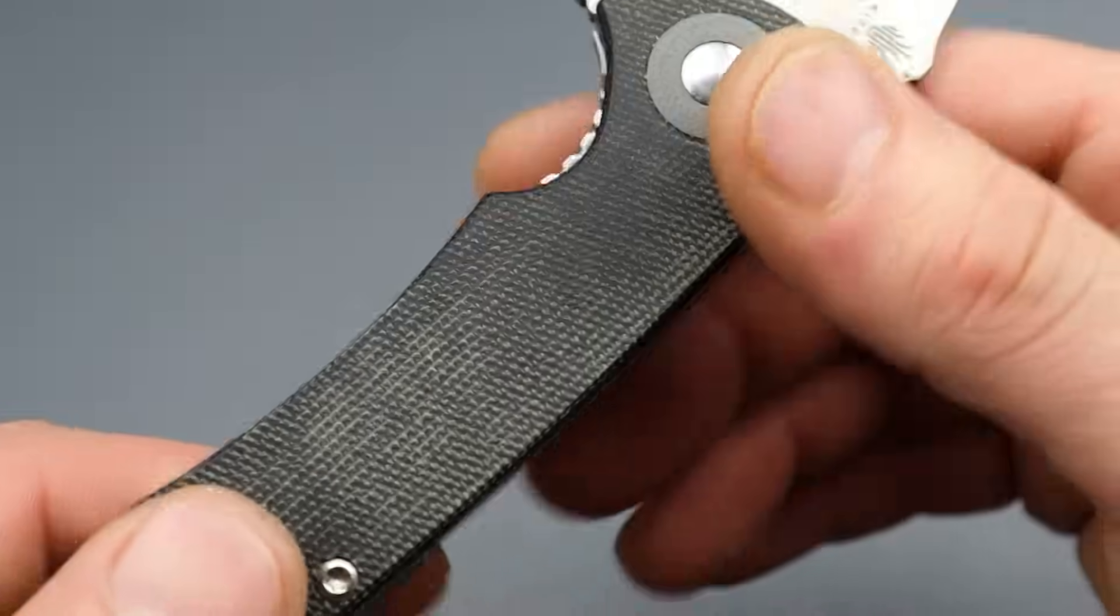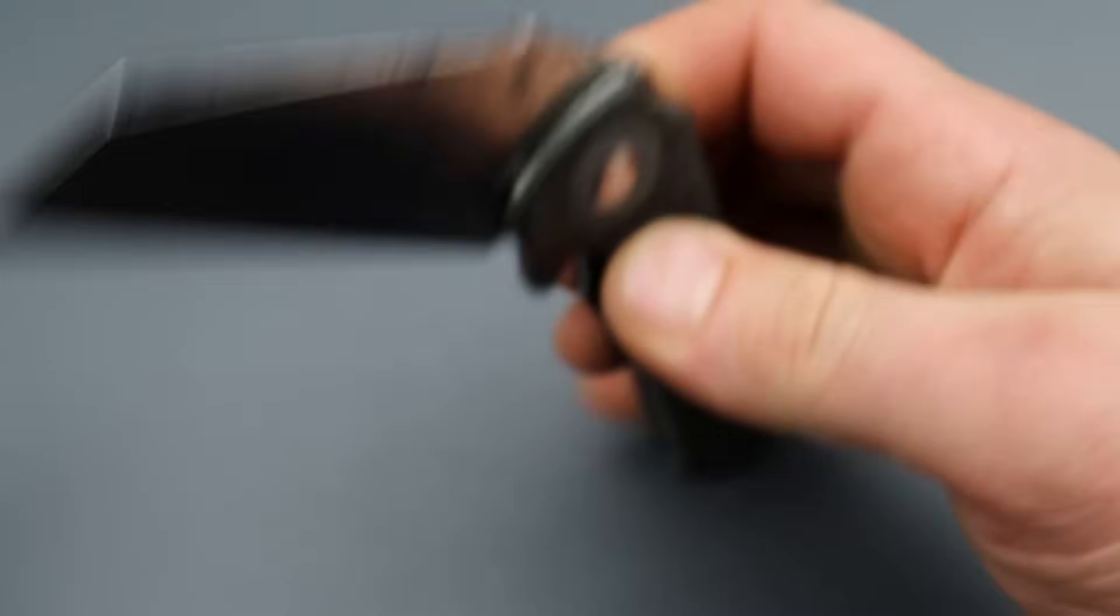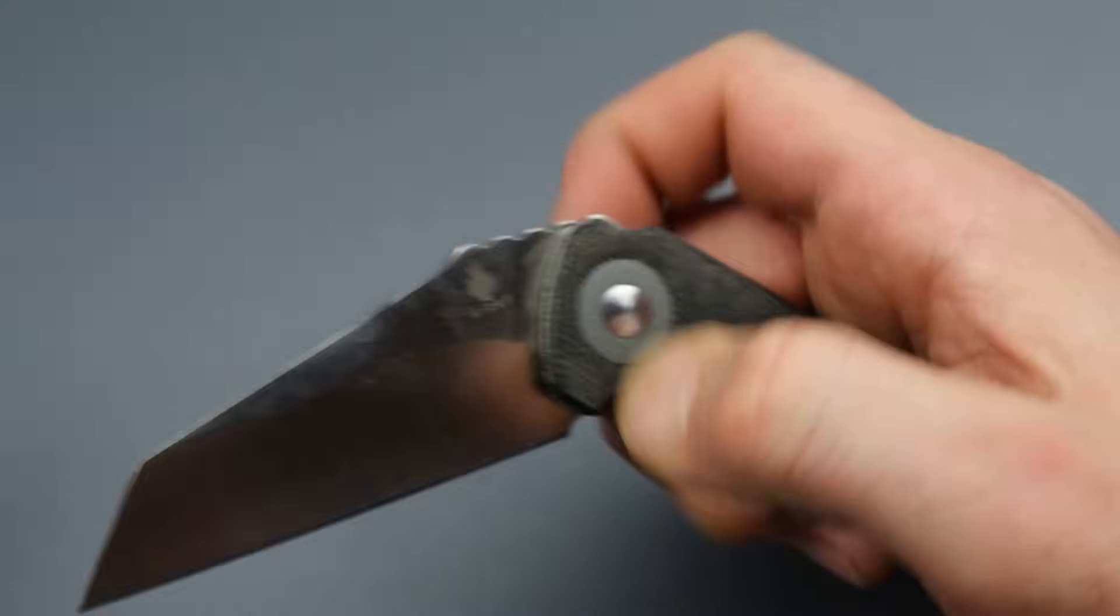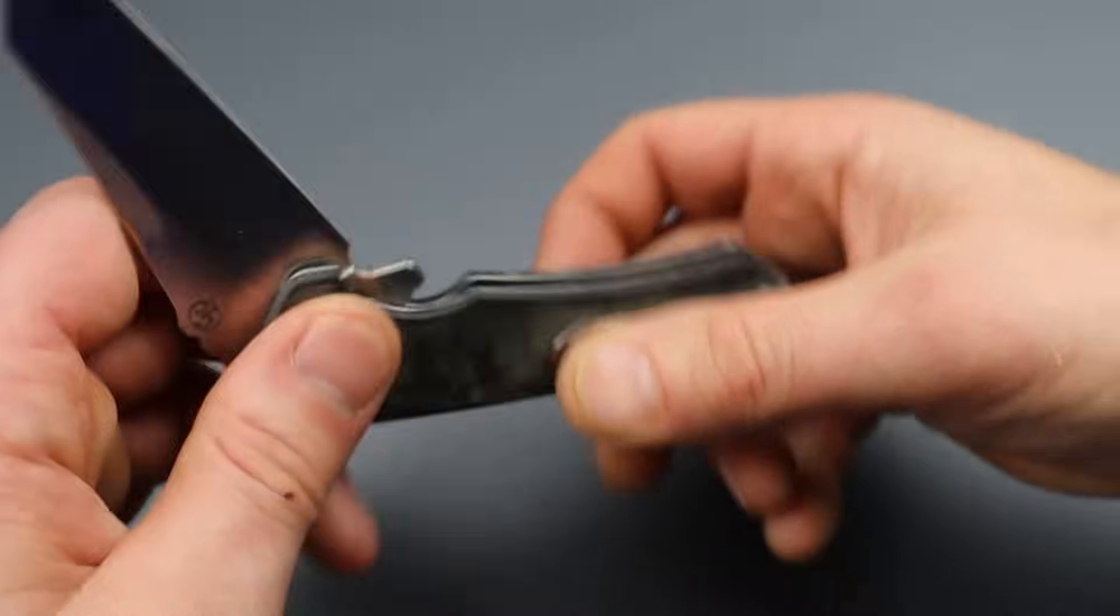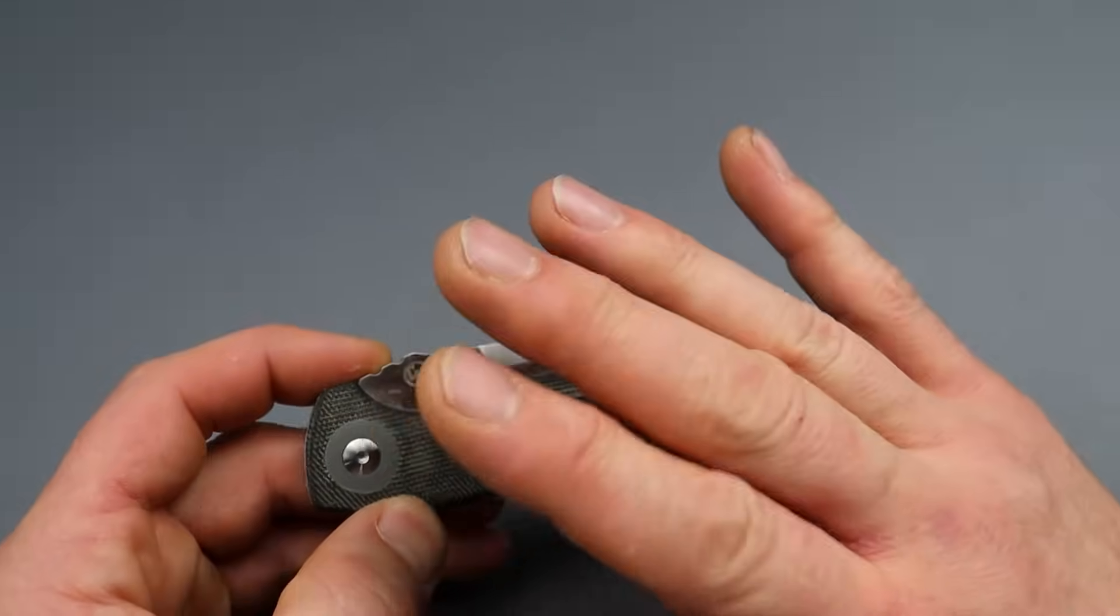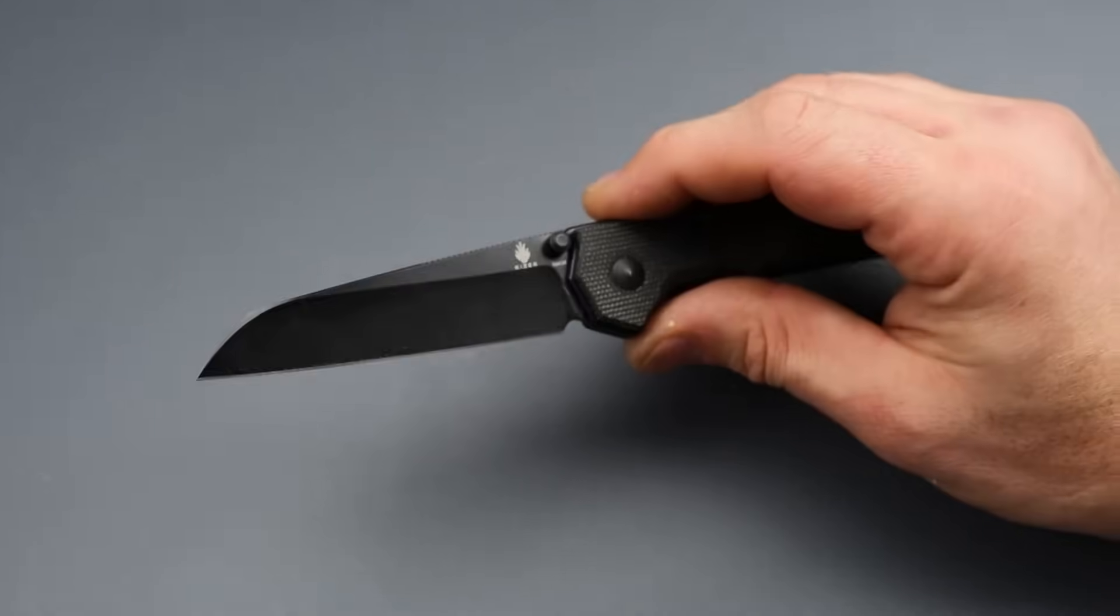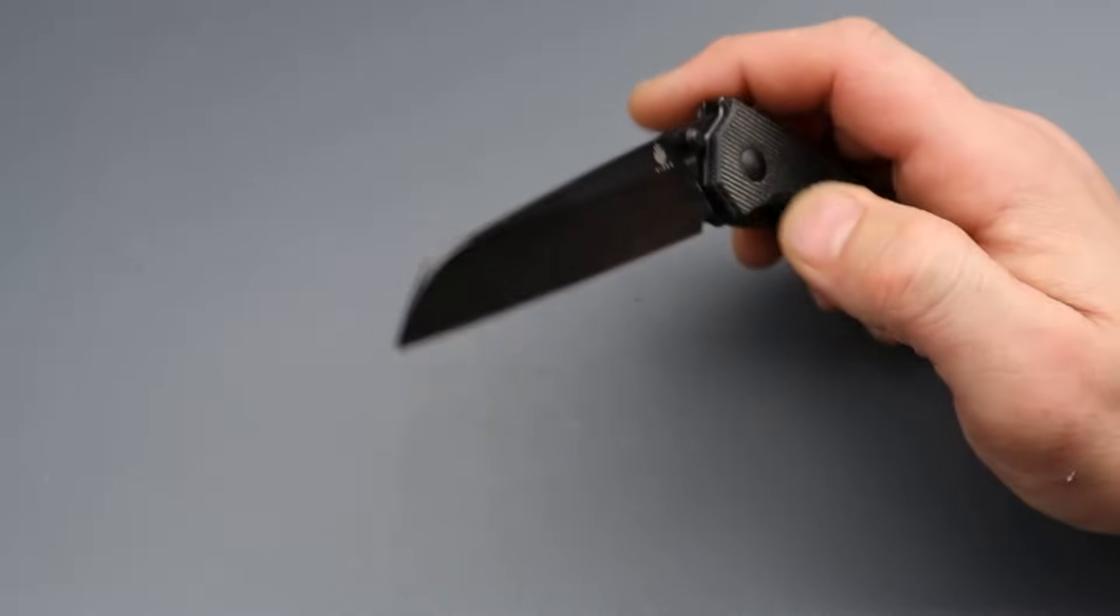The micarta, the scales are Micarta, good quality Micarta, good access to the liner, nice snappy deployment, comfortable flipper tabs, fantastic size for a compact utility blade. Yeah, I can't recommend the critical enough, the mini critical. Now, another one they have for sale for like 30 bucks, which is absolutely insane.